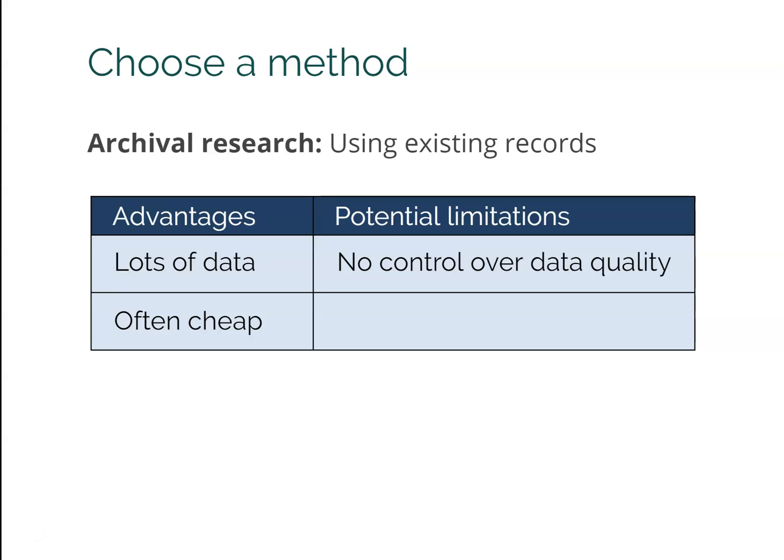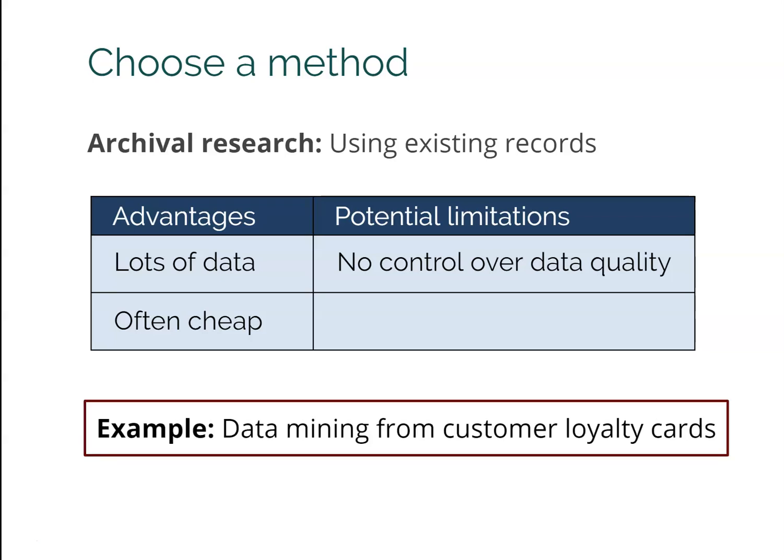One example of archival research in everyday life is customer loyalty cards — places like Starbucks or Dunkin' Donuts where you earn points toward a free coffee. The reason those companies like it is they're getting a ton of data from you: not just how much coffee you buy, but what days of the week you usually shop, what times of day, what your preferred drinks are, whether a Sunday email coupon gets used on Monday, and whether you respond more to email or the app. You might get free coffee, but that's why they're doing it.